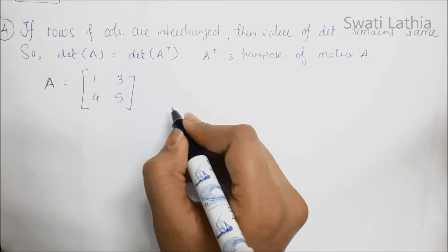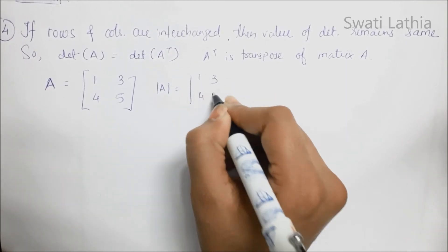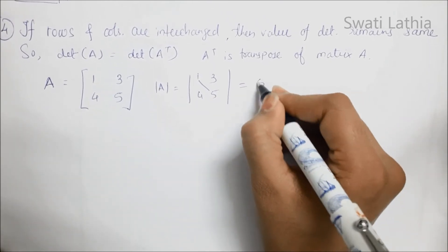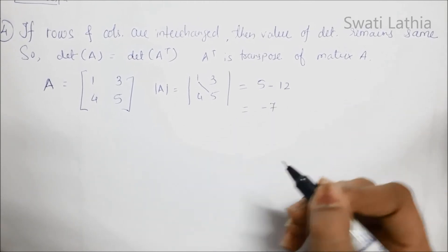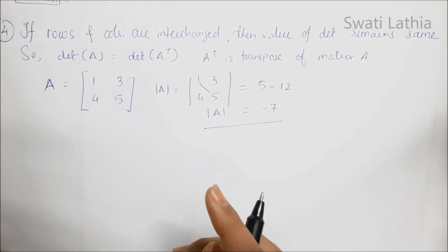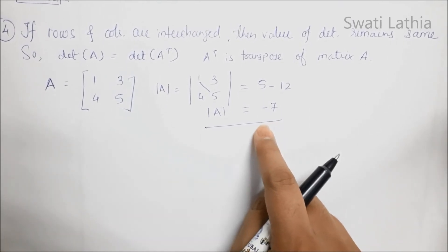હે આપડે સોથી પેલા આનુ Determinant લઇ સું. That is 1, 3, 4, 5. આ બને વચે minus 7 આપે.